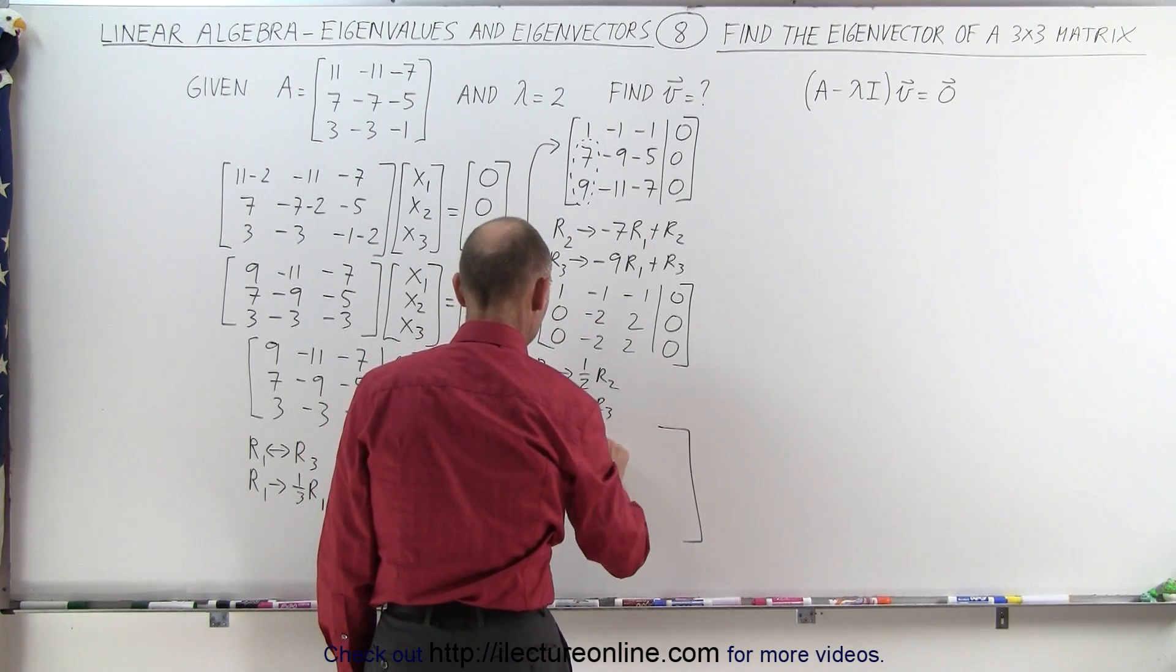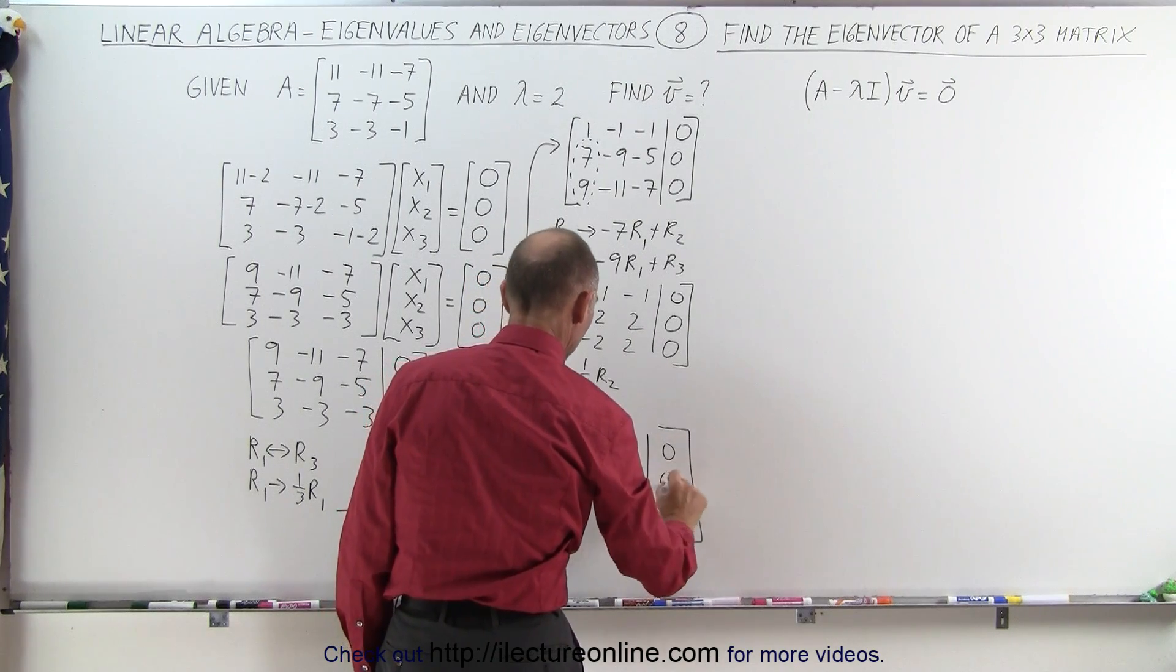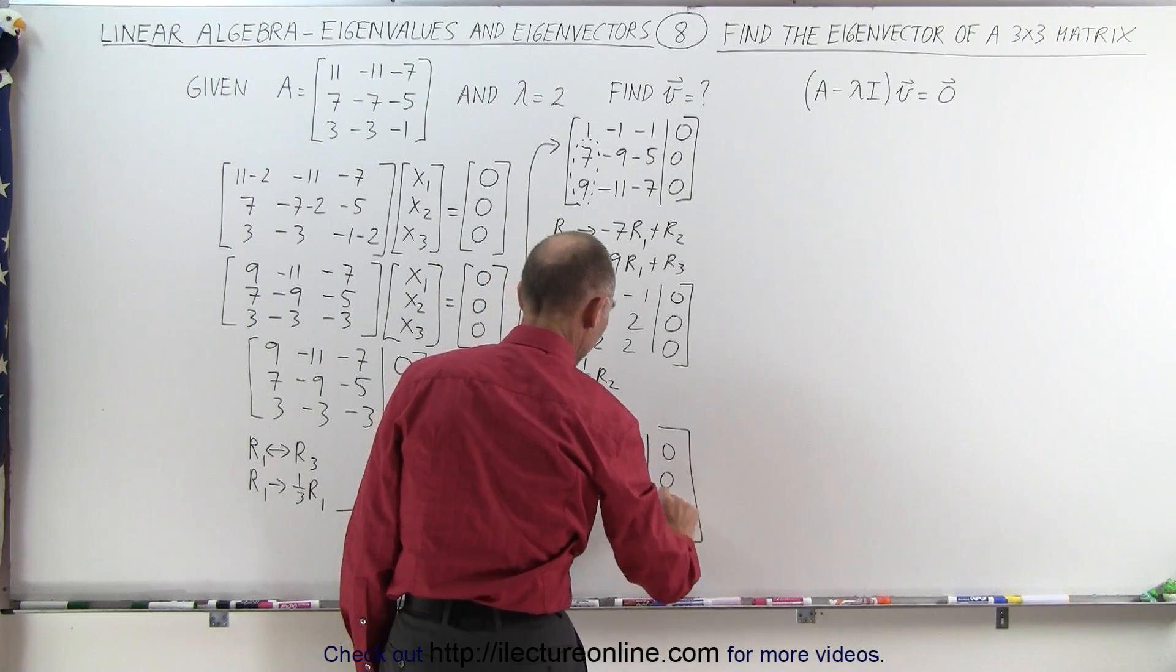So, we end up at a 1, a negative 1, a negative 1, 0. 0, negative 1, 1, and 0. And 0, negative 1, 1, and 0.